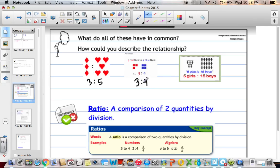Red and blue. For every 3, there's 4 blue. 5 girls to 15 boys. We would write it as 5 to 15. So again, this is telling us that for every 5 girls, there's 15 boys.